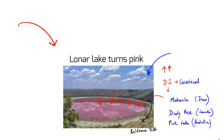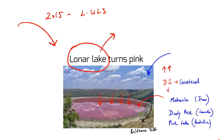The area around Lonar has also been declared a wildlife sanctuary in 2015, by the name Lonar Wildlife Sanctuary. Moreover, the mention of Lonar Lake has also been found in the Ain-i-Akbari, which was written by the court historian of Akbar, Abul Fazl. So in history also, the lake has been mentioned. This is all about this particular issue.